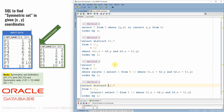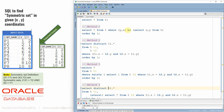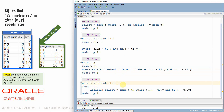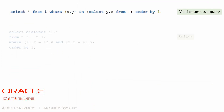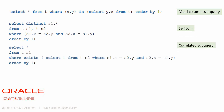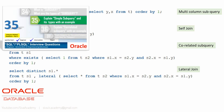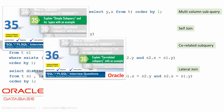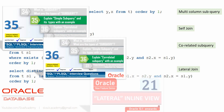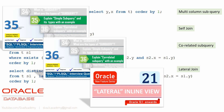The first method used the multi-column subquery, the second method used the self-join, the third method used the correlated subquery, and the fourth method used the lateral join. Here are the queries for your reference. Most of these topics have already been covered in earlier videos — if you want to understand how the multi-column subquery, correlated subquery, or lateral join works, you can watch those respective videos.